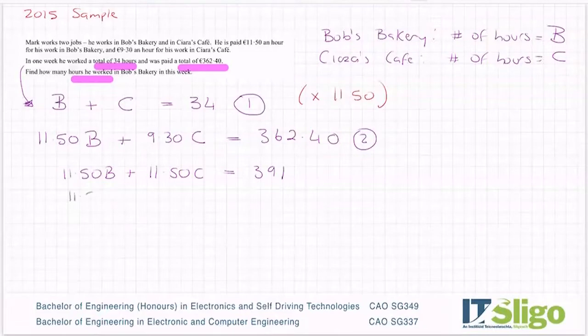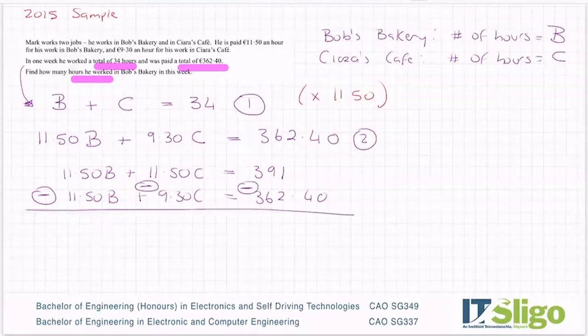And I just take down the second equation, which was 11.50B plus 9.30C equals 362.40. I have to change the sign, change the sign, change the sign, put a line under it, and now my Bs cancel.